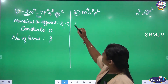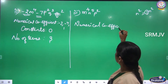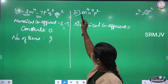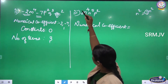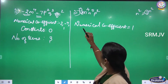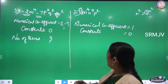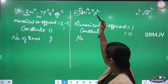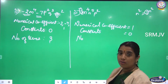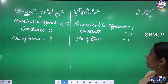Now for the third expression. As I said for the first and second sums, this expression starts with m⁴. The numerical coefficient here is 1. No constants, so constants = 0. For the number of terms: m⁴·n⁵·p² has no plus or minus operation, so it is 1 term — a monomial.